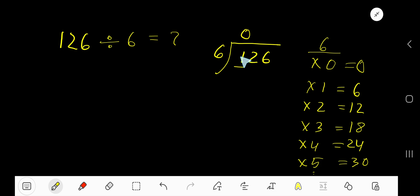6 goes into 12 how many times? 6 goes into 12, 2 times. 2 times 6 is 12. Subtract to get 0. Bring down the last digit 6. 6 goes into 6 how many times?